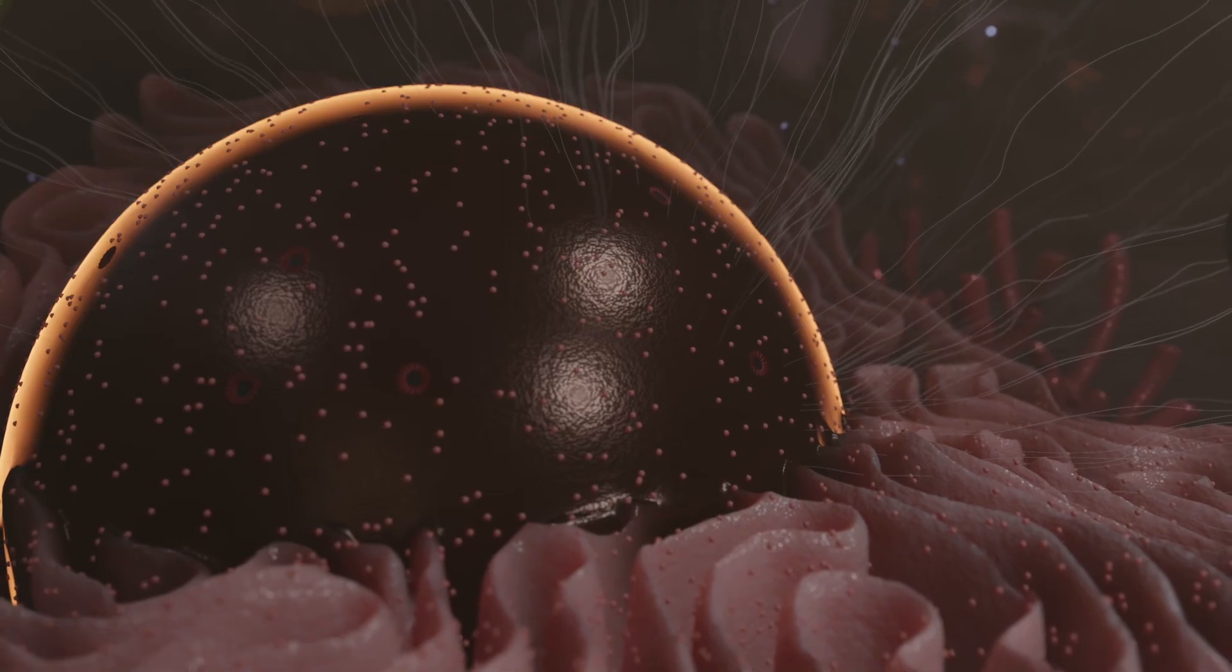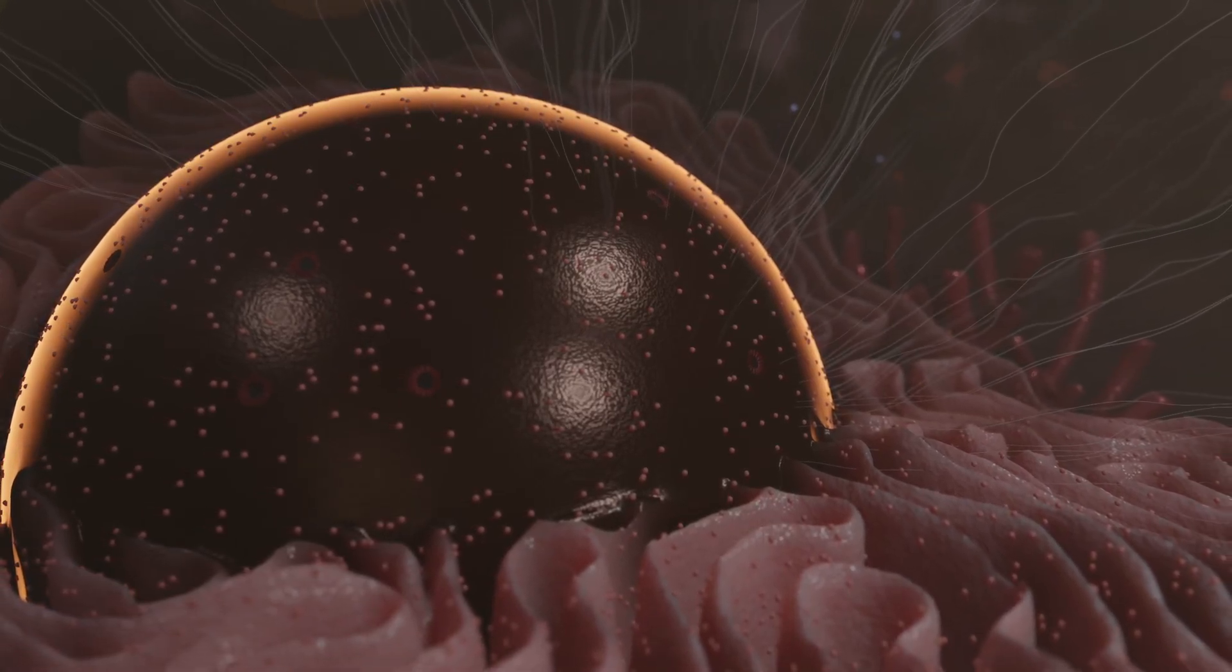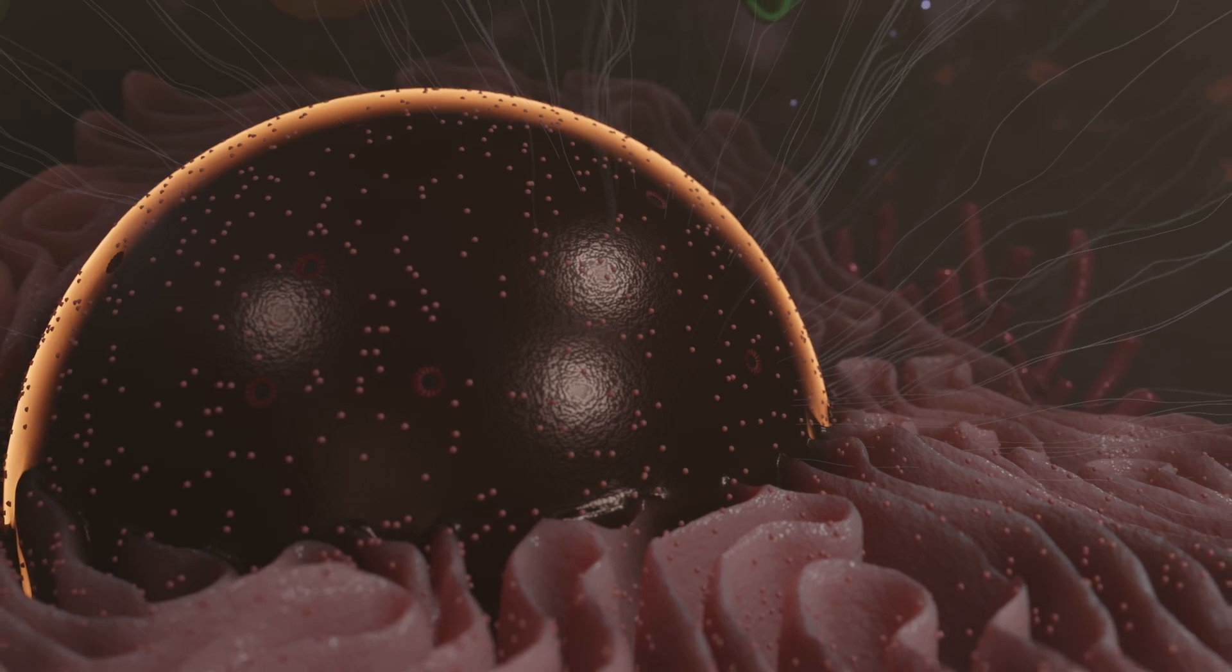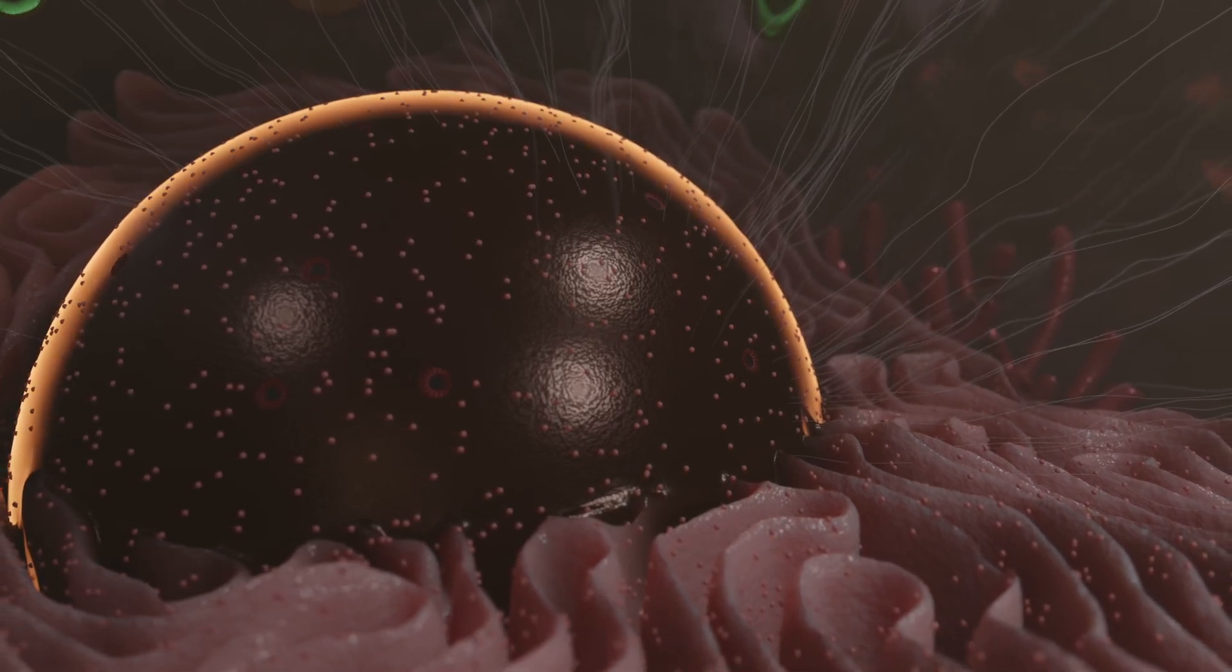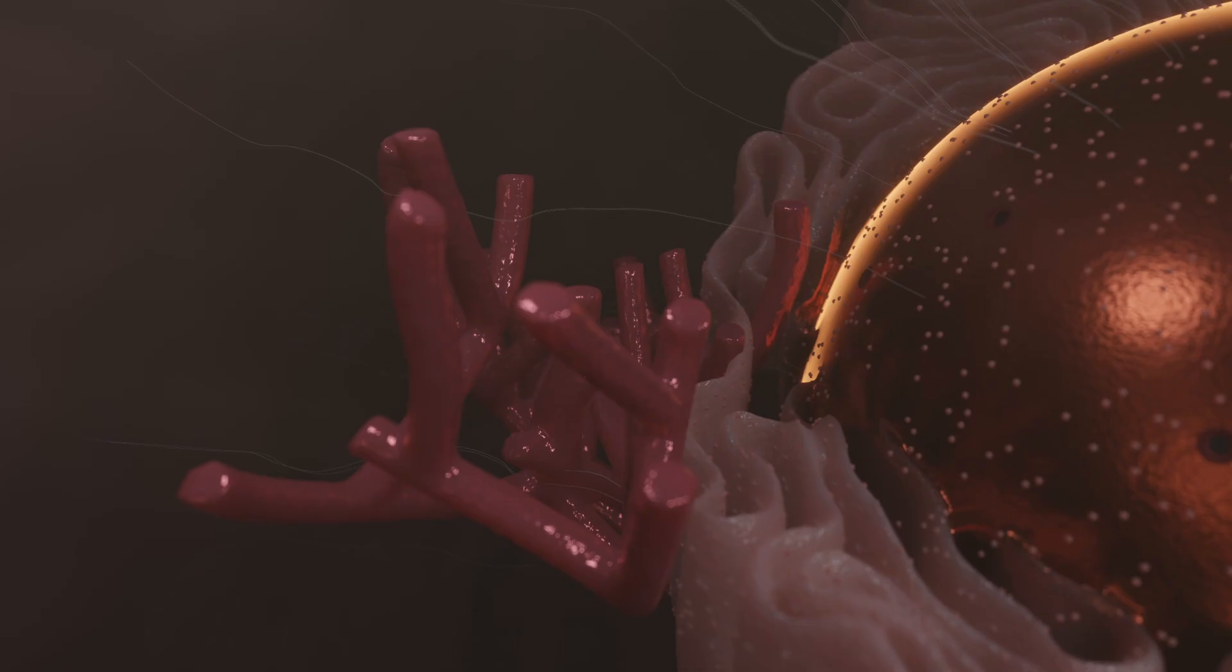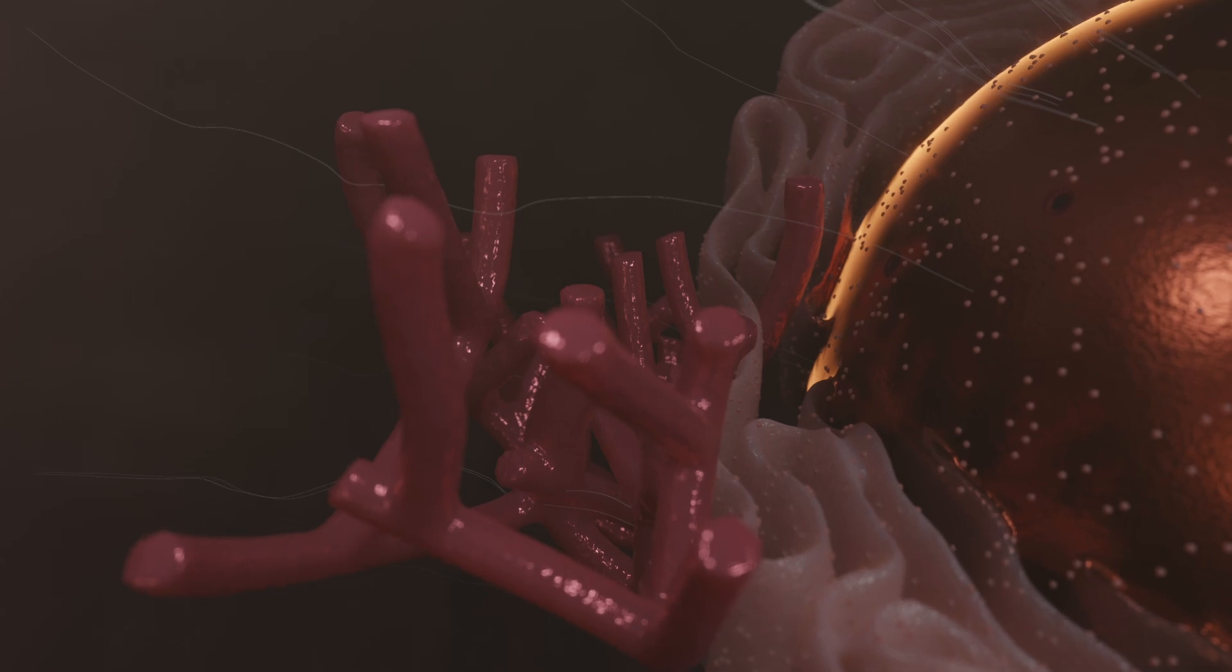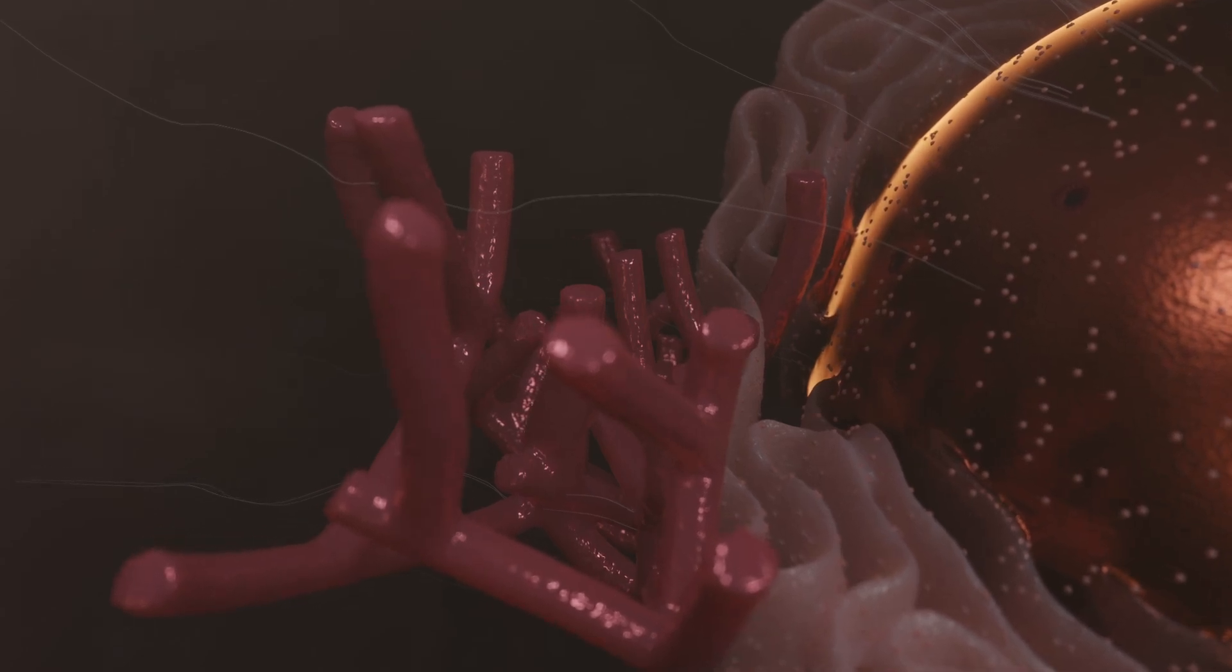The outer membrane of the cell nucleus is covered with ribosomes and merges directly into the endoplasmic reticulum. This highly branched system has both a smooth and a rough area. The smooth endoplasmic reticulum has a tubular structure and is weakly developed in most cells.